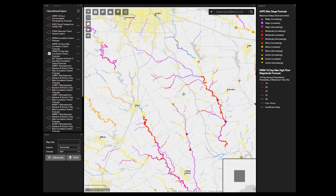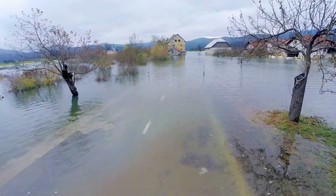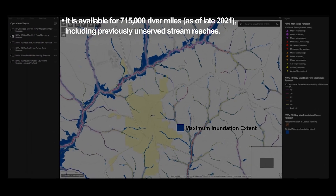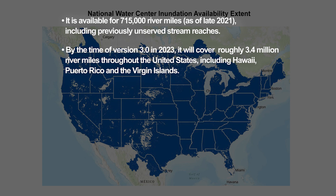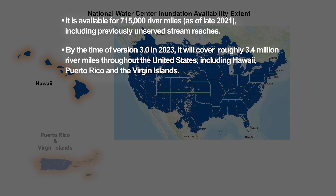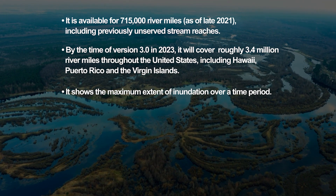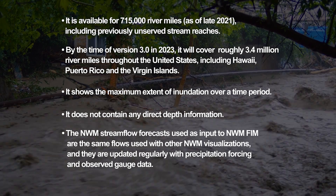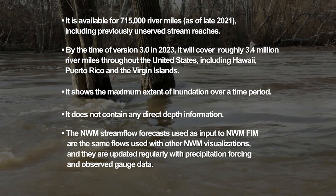So as you can see, the NWM FEM is only one option in a set of guidance tools that can be used to assess the inundation risk and increase the situational awareness of potentially flood prone areas based on NWM output. In summary, the NWM FEM provides forecasts of flood inundation that can be used for situational awareness. It is available for roughly 3.4 million river miles throughout the United States including Hawaii, Puerto Rico, and the Virgin Islands as of summer 2022, including previously unserved stream reaches. It shows the maximum extent of inundation over a time period and does not contain any direct depth information. The NWM stream flow forecasts used as input to NWM FEM are the same flows used with other NWM visualizations and they are updated regularly with precipitation forcing and observed gauge data.